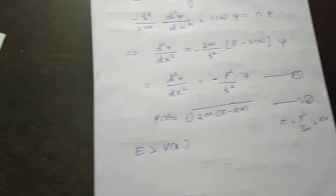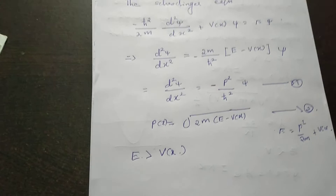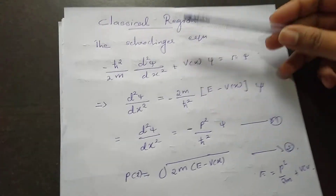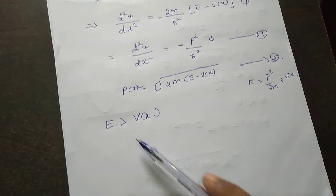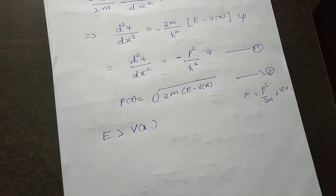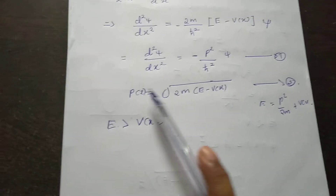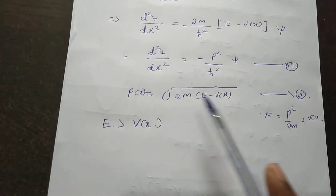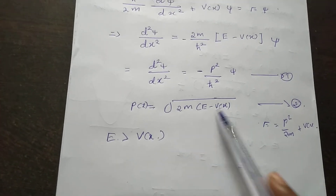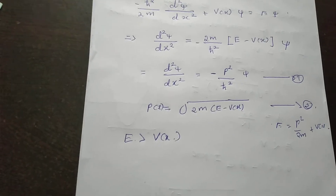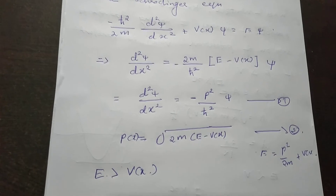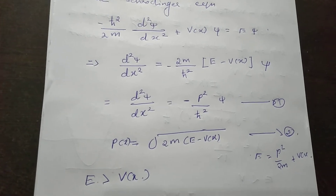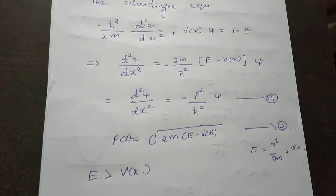We assume here that E is greater than V(x). It is the classical region. We consider the classical region because if we consider the potential energy, the incident particle has momentum p(x) equal to the square root of 2m(E minus V(x)). Since E is greater than V(x), this term under the root is positive, so the value of momentum is real. That means it represents a classical region.